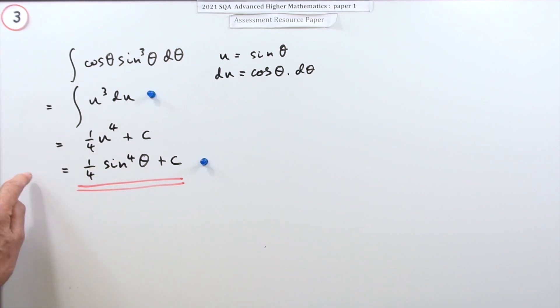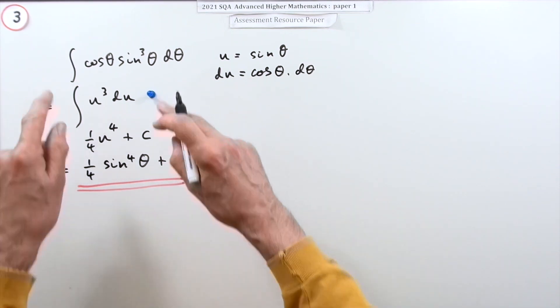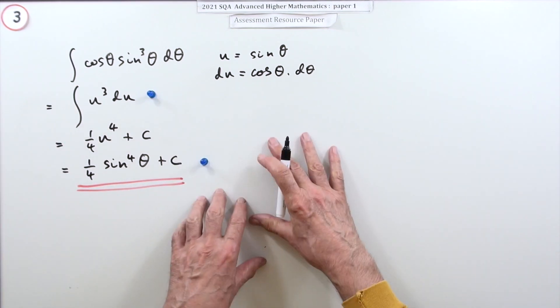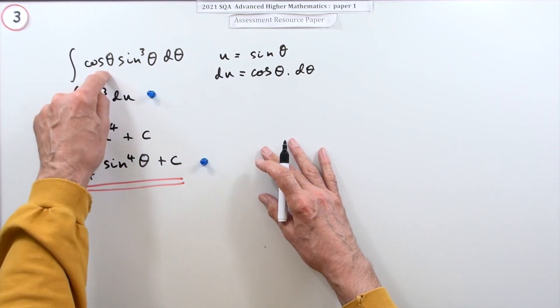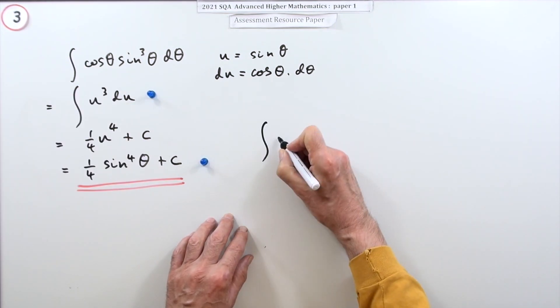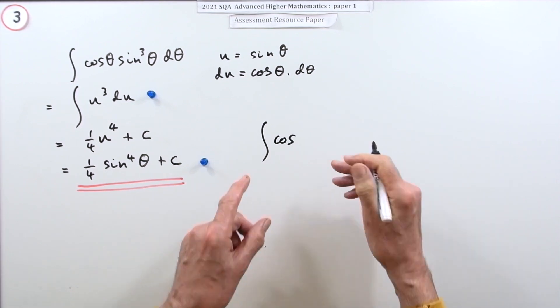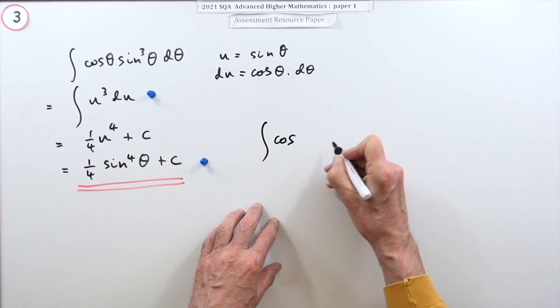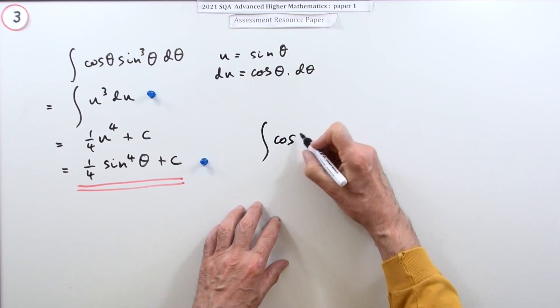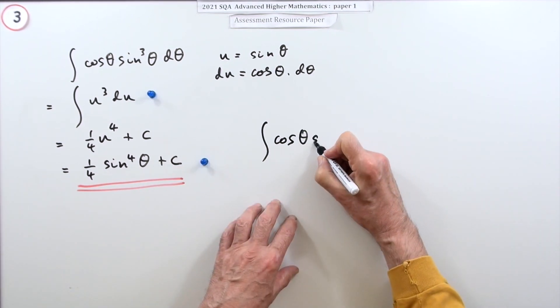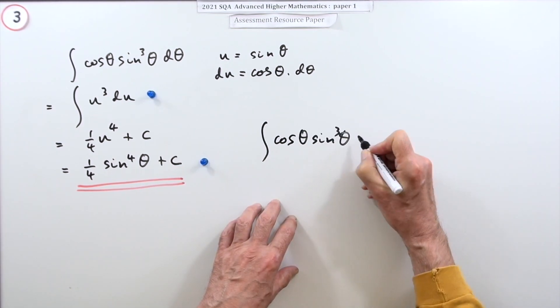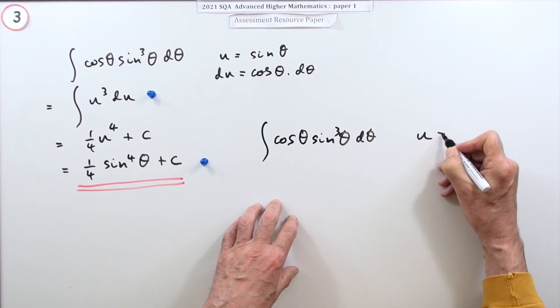And that was very neat and clean because it was quite easy to search and replace. Now, in a more complicated case, or even just in straightforward cases like this, you might find it easier just to do a direct substitution of the various parts as they appear. Going back to that same integral and that same substitution.